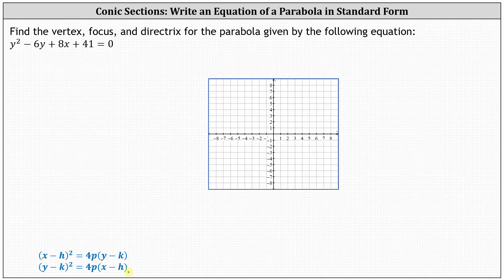To write the equation in standard form, we first isolate the y terms on the left and move the other terms to the right. This indicates the first step is to subtract 8x and subtract 41 on both sides of the equation, giving us y squared minus 6y equals negative 8x minus 41.